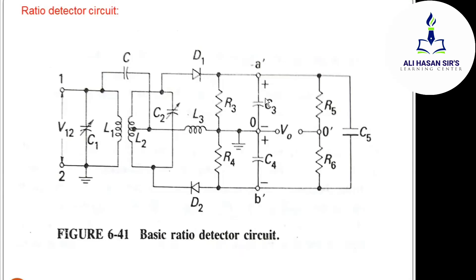So the ratio detector circuit is understood in two parts: first, frequency variation is converted to amplitude variation, and second, amplitude variation recovers the original information signal. There is a very important element in the ratio detector circuit — the large value capacitor C5. This is what differentiates the ratio detector from other detector circuits. Recall that in the FM superheterodyne receiver block diagram, an amplitude limiter block comes before the detector.